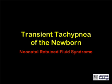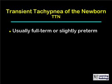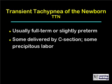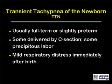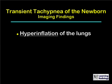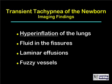Transient tachypnea of the newborn, also called neonatal retained fluid syndrome, usually occurs in full-term or slightly preterm infants — some delivered by cesarean section, others through precipitous labor. There is usually mild respiratory distress immediately after birth that improves within several hours. Imaging findings include hyperinflation of the lungs, fluid in the fissures, laminar effusions, and indistinct or fuzzy vessels — findings similar to congestive heart failure.